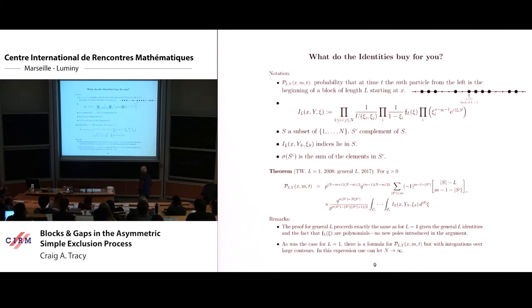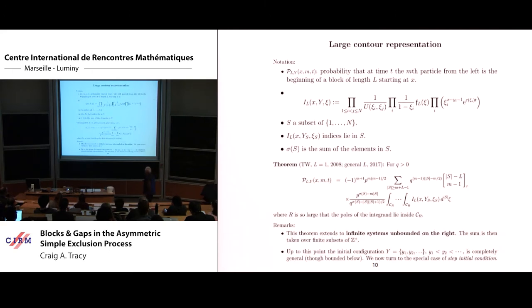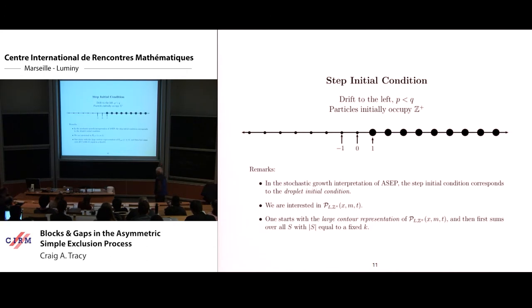You get some series for this probability. We still haven't taken the n goes to infinity limit. It turns out you can expand the contours out, you get an infinite series, and you can take the limit n goes to infinity. So this is an exact formula for that probability. Of course, it's still a mess in the sense you can't analyze it asymptotically.